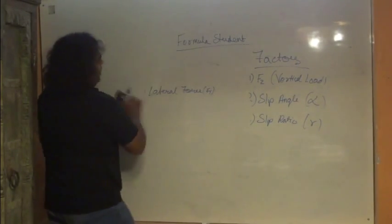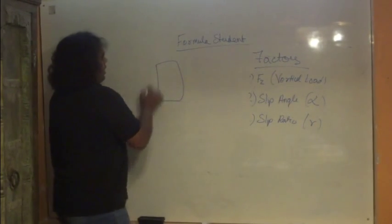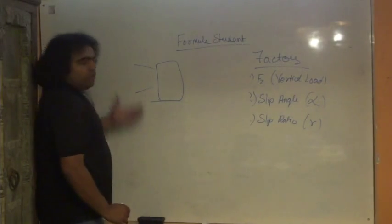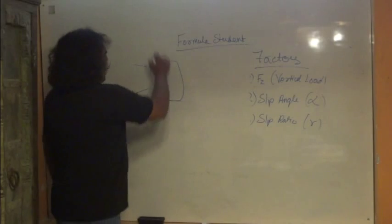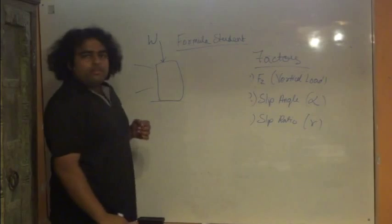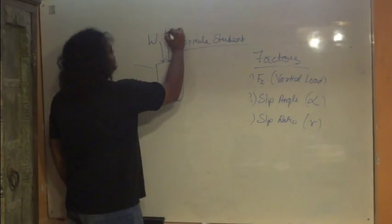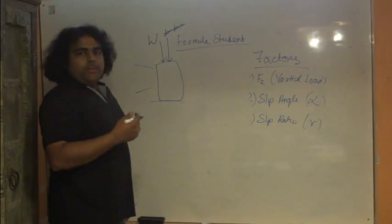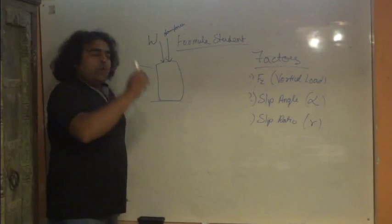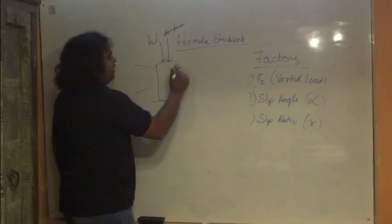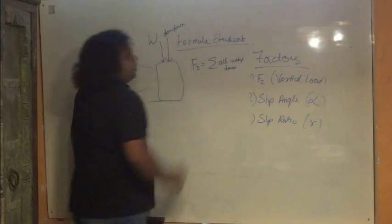Let's talk about how these factors affect longitudinal and lateral forces. First, this is a tyre on the ground — suppose this is the suspension that you have on your car. There is a weight of your car, W, acting on this tyre. If you are having wings and going at good speed, you also have some downforce. And if you are accelerating with a lot of load transfer, another force acts upward. The sum of all vertical forces acting on your tyre gives you Fz.